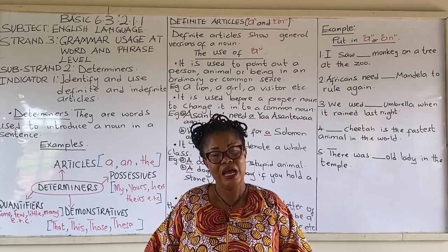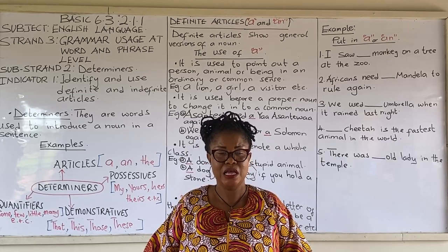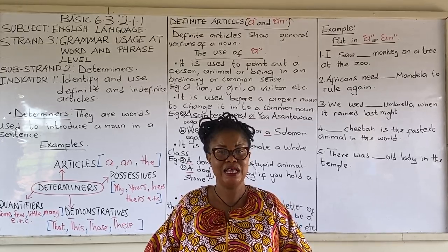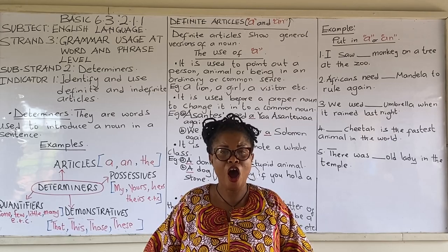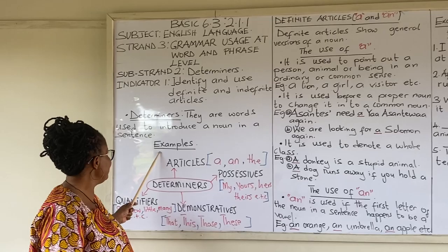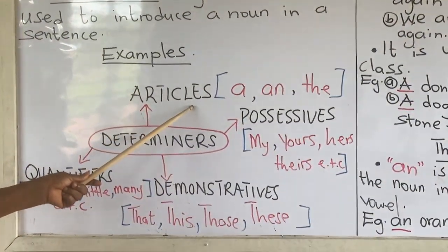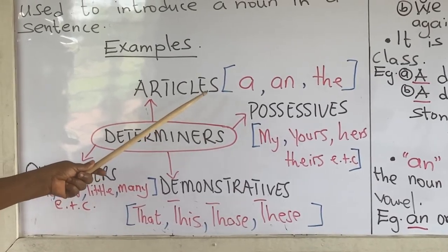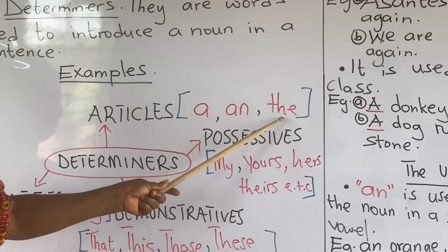Now let's look at examples of determiners. We have a whole lot of determiners, but with your level we are going to look at four types. Examples: we have articles, and examples of articles are 'a', 'an', and 'the'.